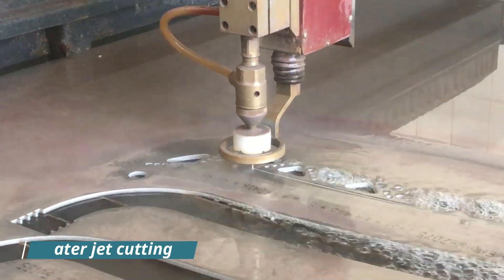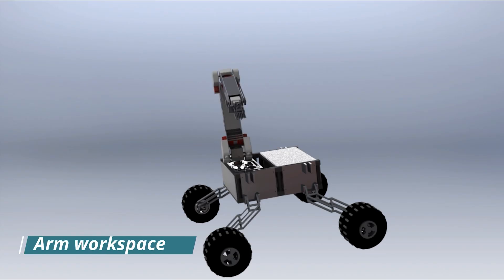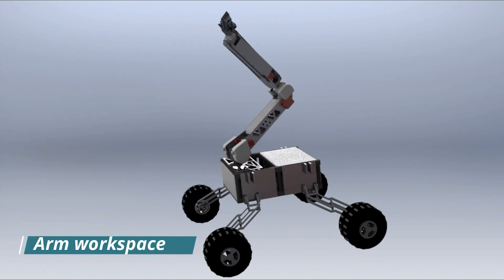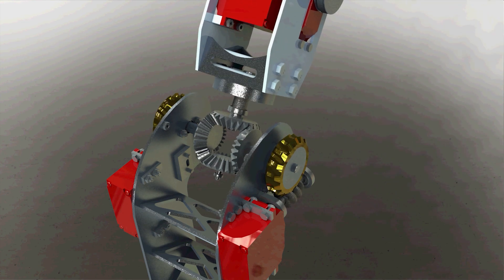A six degree of freedom robotic arm was designed with a maximum payload of five kilograms and a nearly spherical workspace. It consists of three cascaded two degree of freedom joints, each implemented using a differential bevel gear set.